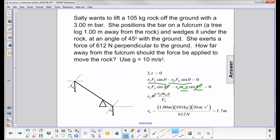And then we get the distance that Sally should be from the fulcrum: her force times the distance equals the rock's mass times G times the distance to the rock, divided by Sally's force. And we get an answer. She should be 1.7 meters away.